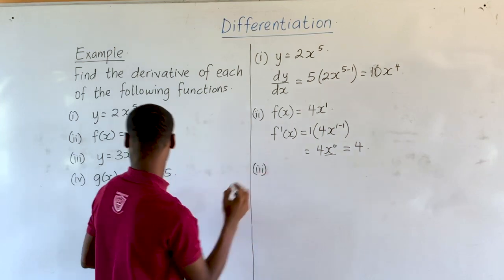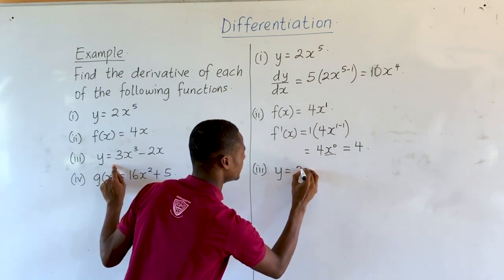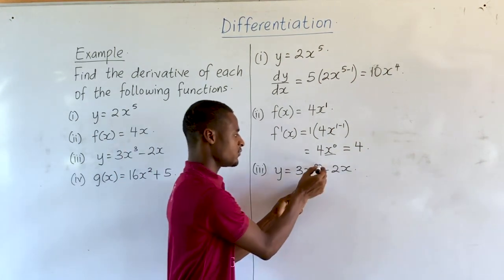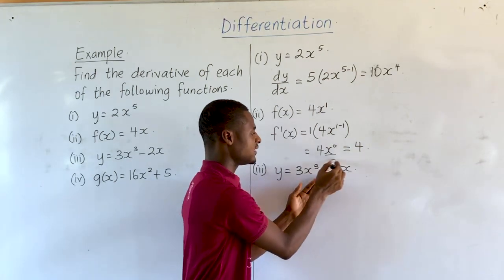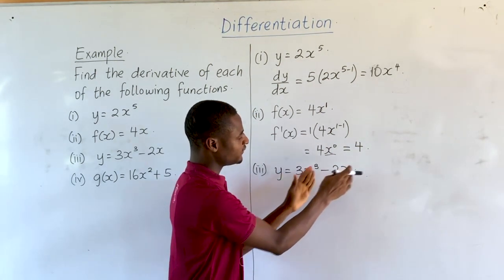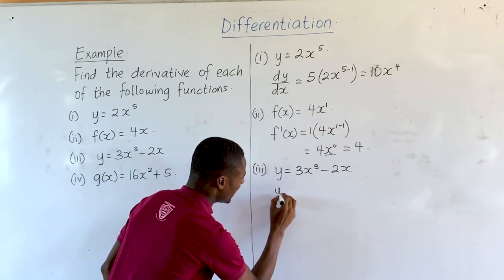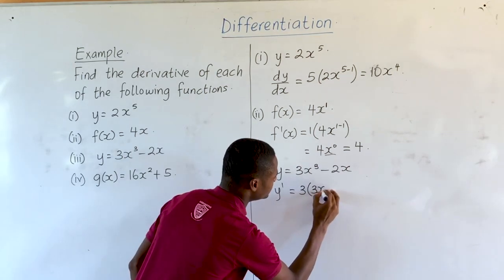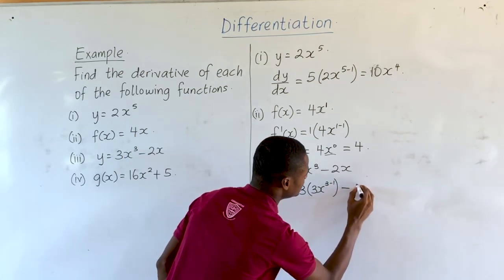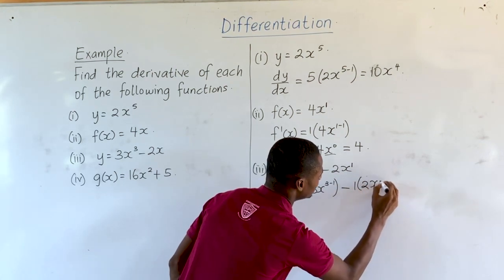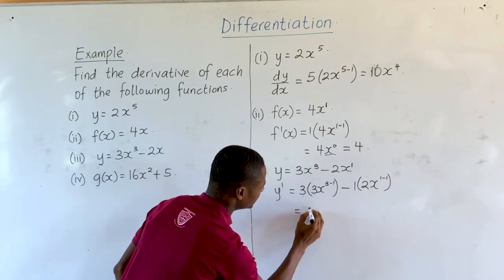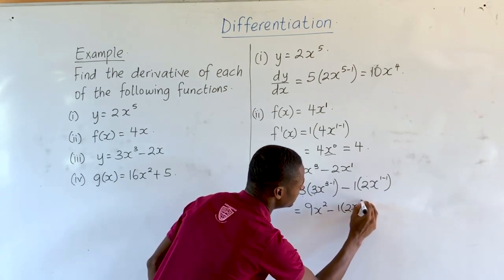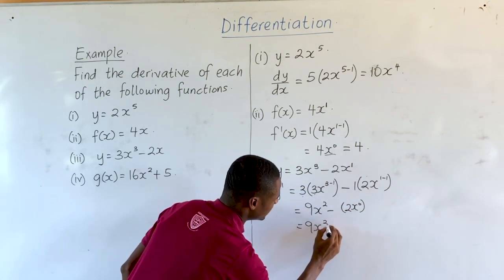For the third function, y is equal to 3x raised to the power 3 minus 2x. Note that this is a combination of two different functions: 3x cubed and negative 2x. We perform the differentiation on them separately. So y prime is 3 times 3x raised to the power 3 minus 1, minus 1 times 2x raised to the power 1 minus 1. That equals 9x squared minus 2.